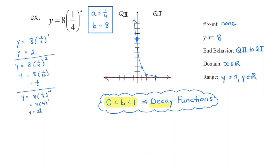I got a few more points and plotted those on my graph. We're going up really steeply — when x is negative 1, y is actually 32. So at x equals negative 1, we're way up, going sharply but not in a straight line. Once the graph is drawn: no x-intercepts because of the asymptote, y-intercept is 8. Coming in quadrant 2, going out quadrant 1. Domain: x is an element of the reals. Range: y is greater than 0 and an element of the reals. For every value greater than 0, our graph will lie on a point on the y-axis.